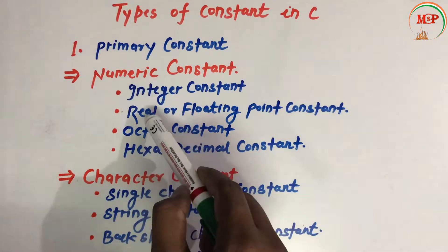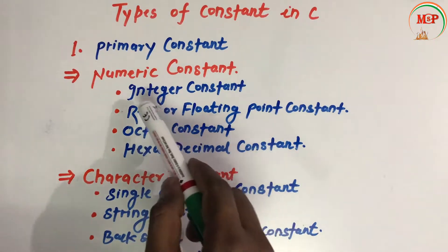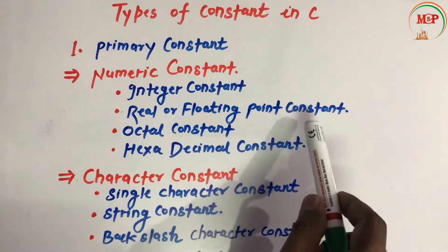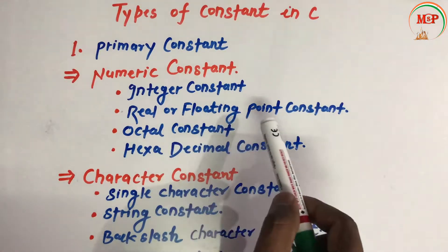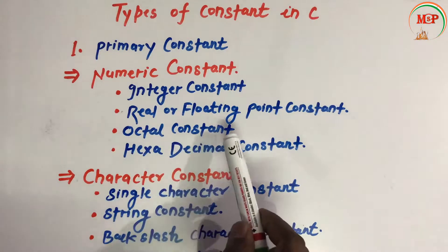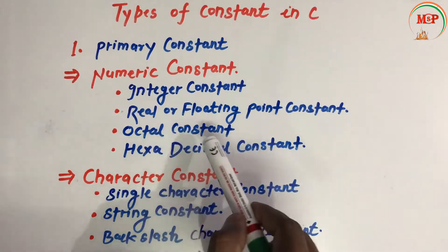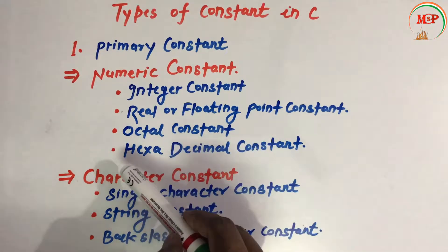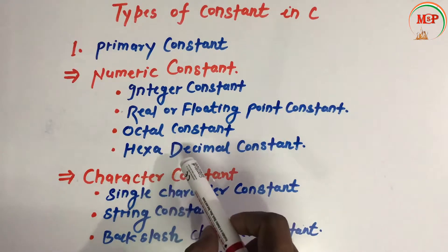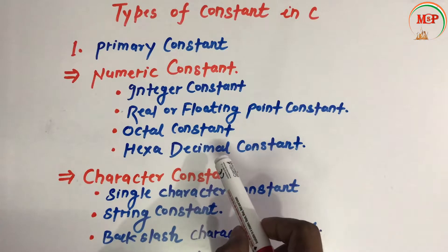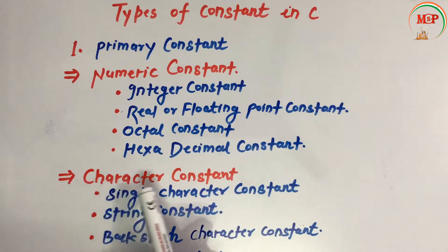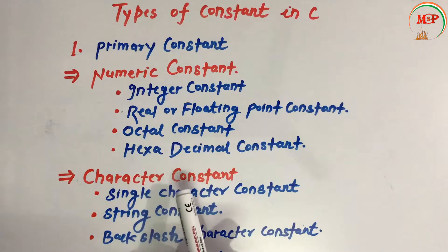Numeric constant is further divided into: integer constant, real or floating point constant, octal constant (base 8), and hexadecimal constant (base 16).